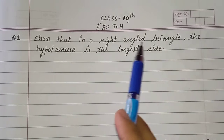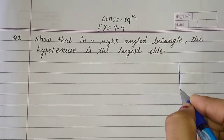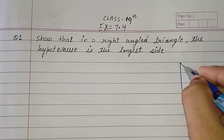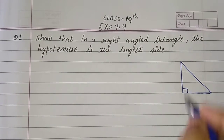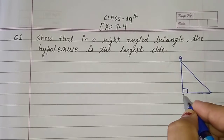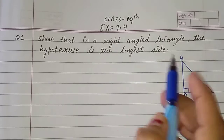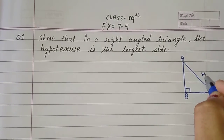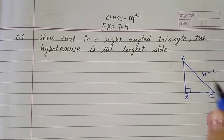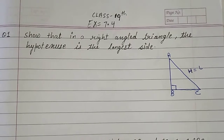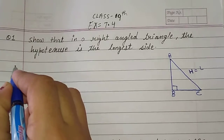Show that in a right angle triangle, first of all we have to make a right angle triangle. This angle is 90 degrees — vertices A, B, C. In this triangle the hypotenuse is the longest side. You have to prove this side is the longest side. How can we prove? Let's start the solution.